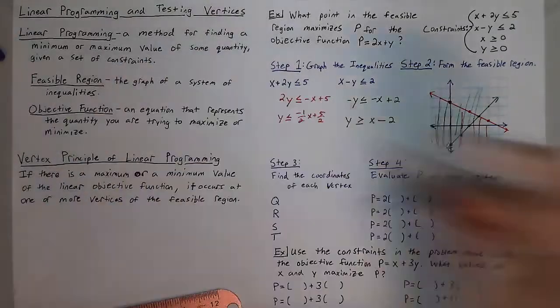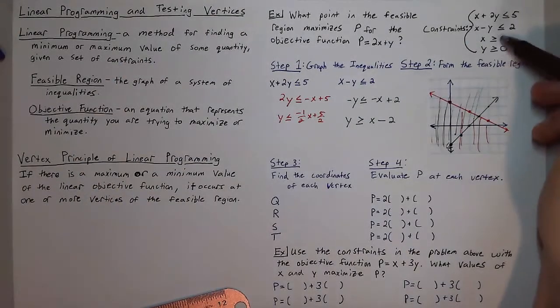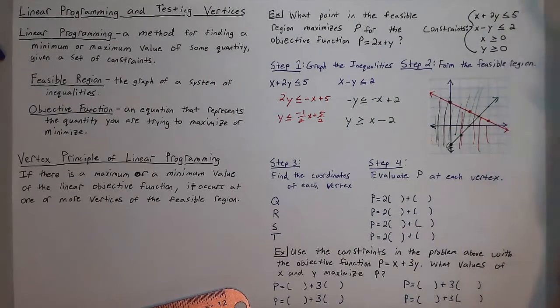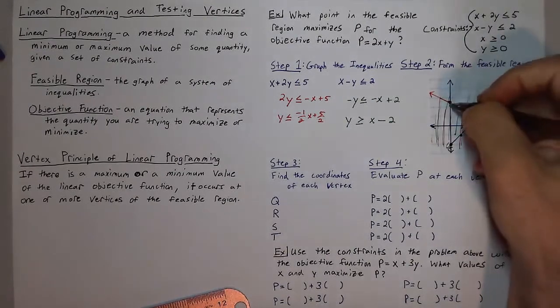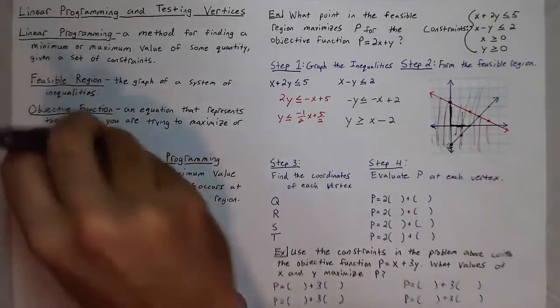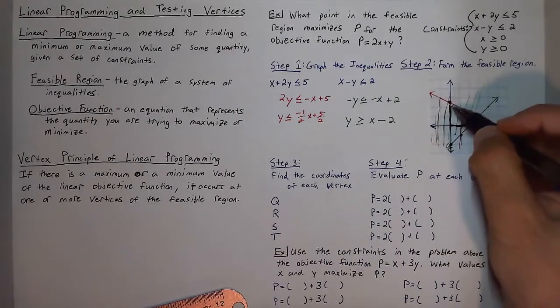And lastly, we have two implicit constraints. This says that x has to be positive and y has to be positive, so we are going to be within the first quadrants. This gives us our feasible region right here.